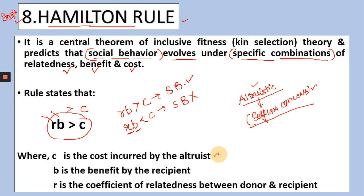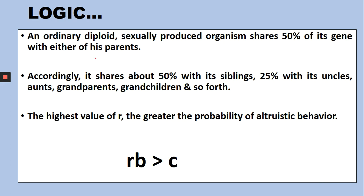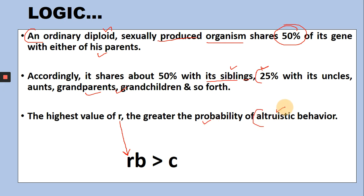C is the cost incurred by the altruistic individual. B is the benefit received by the recipient, because their life is being saved. R is the coefficient of relatedness between donor and recipient. This is the basic logic: if you consider an ordinary diploid organism and a sexually reproducing organism, it shares 50% of its genes with its parents, and similarly 50% of genes with its siblings — brothers and sisters. These are the very close relationships. But as generations increase — like uncles, aunts, grandparents, grandchildren — this percentage keeps decreasing. The higher the coefficient of relatedness value, the higher the probability that social behavior like altruistic behavior and selfless concern will be shown. If R value is very low, altruistic behavior will not be shown.